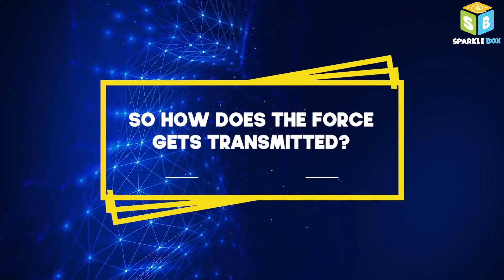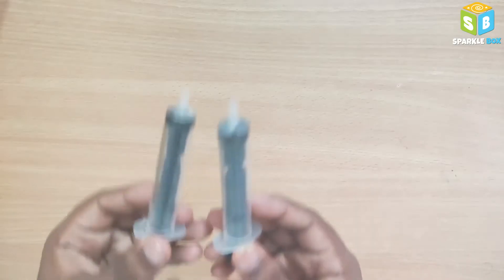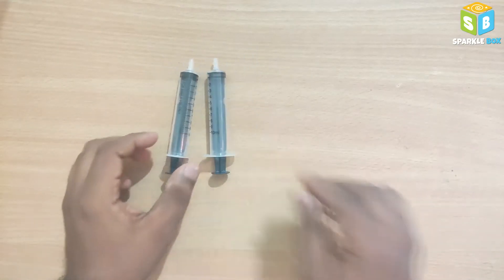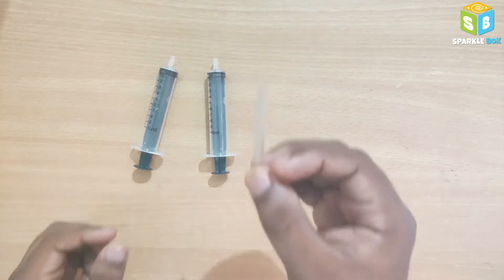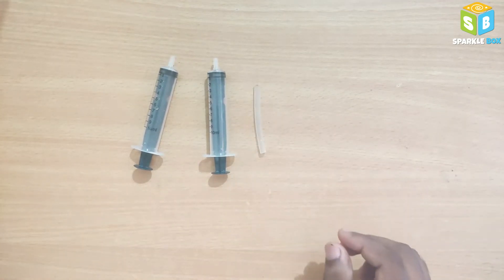Let's do a simple activity to understand. For this activity, you will need two 10 ml syringes, a 5 cm aquarium tube, and colored water.